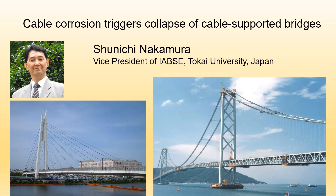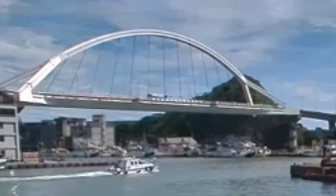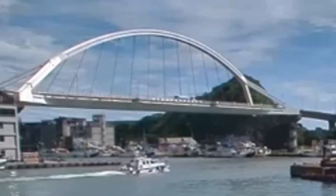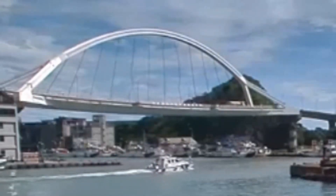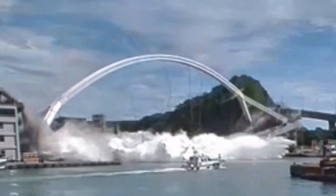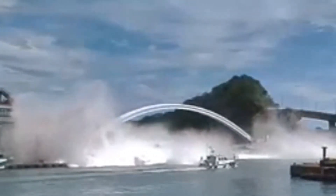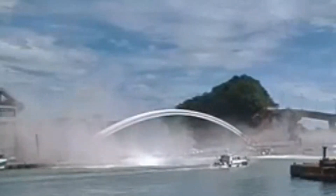I'm going to talk about cable corrosion triggering collapse of cable-supported bridges. I start my talk with this video. This is the Tidal Arch Bridge in Taiwan. When a big lorry moved, hanger ropes broke, then the bridge collapsed.